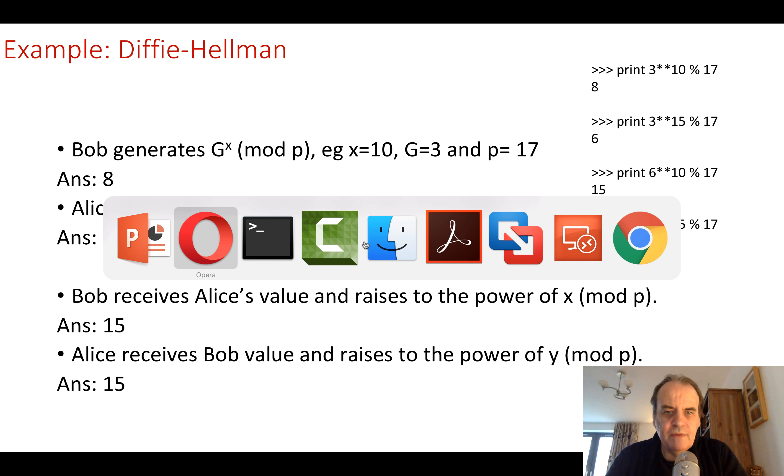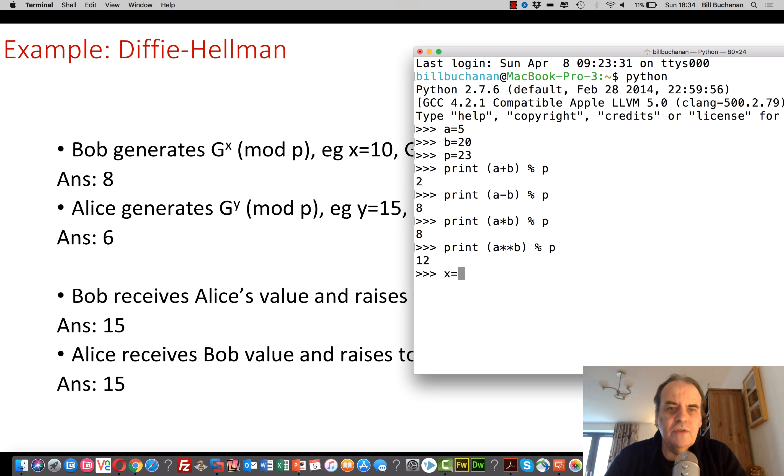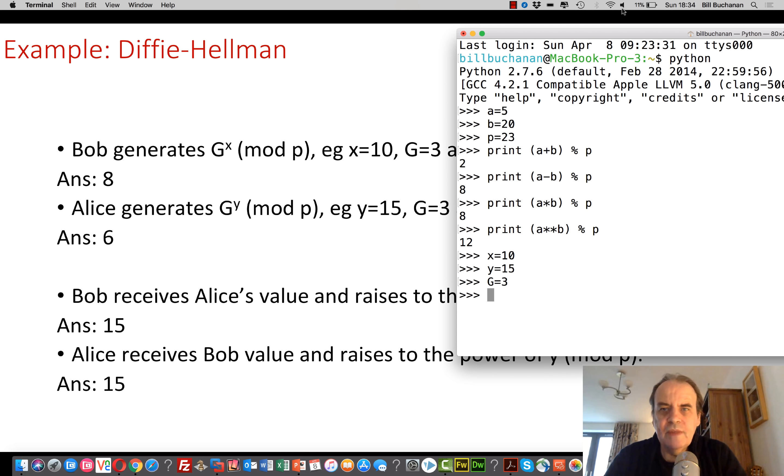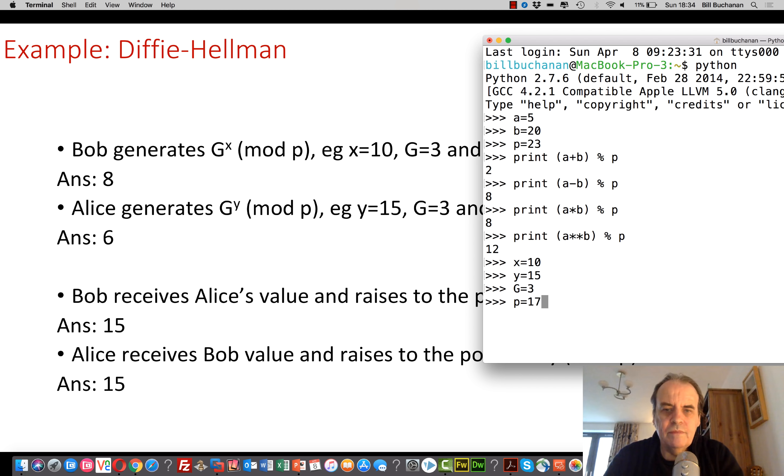So we'll just bring our terminal back. So in this case, if x is 10 and Alice's value is 15. And the g value we're going to use is 3. And the prime number we're using is 17. So Bob's value is g to the power of x mod p. So he gets 8.